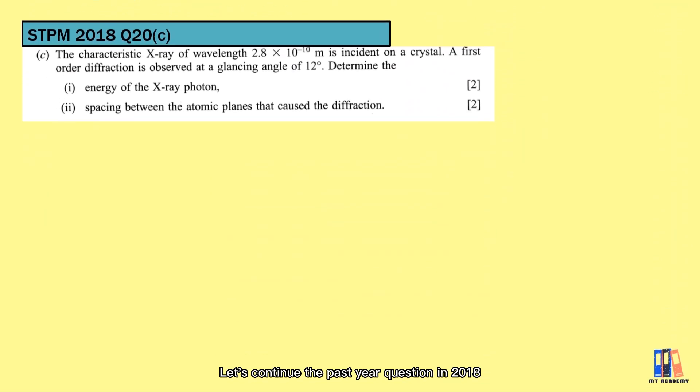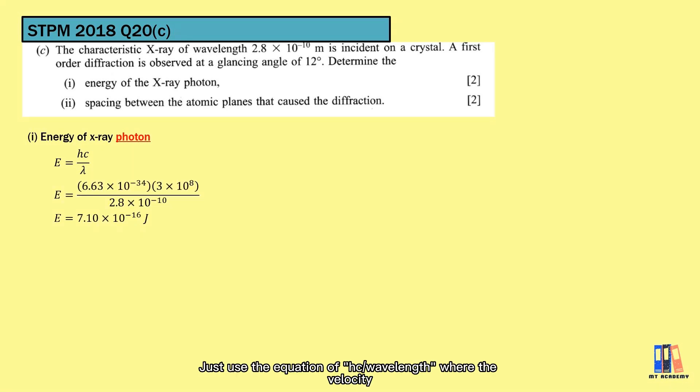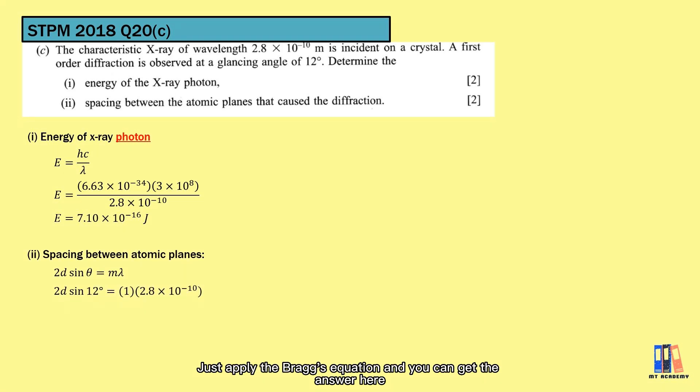Let's continue the past year question in 2018. We are given the wavelength of X-ray, and the first order of diffraction is observed at a glancing angle of 12 degrees. First question, determine the energy of X-ray photon, which is not a problem for you. Just use the equation hc over lambda, where the velocity this time is the velocity of photon, 3 times 10 to the power of 8 m per second. Next is the spacing between atomic planes. Just apply the Bragg equation and you can get the answer here.